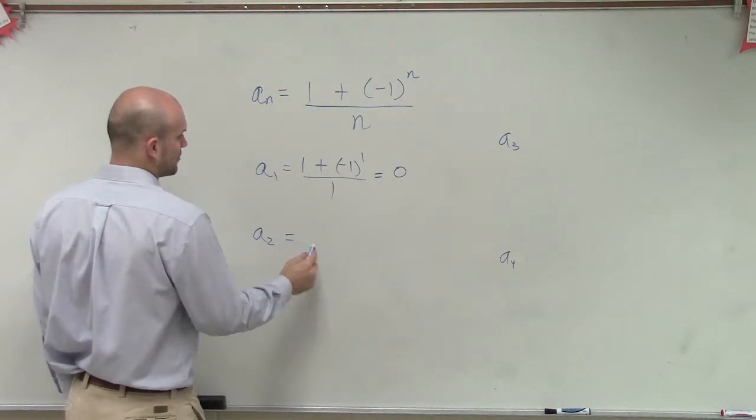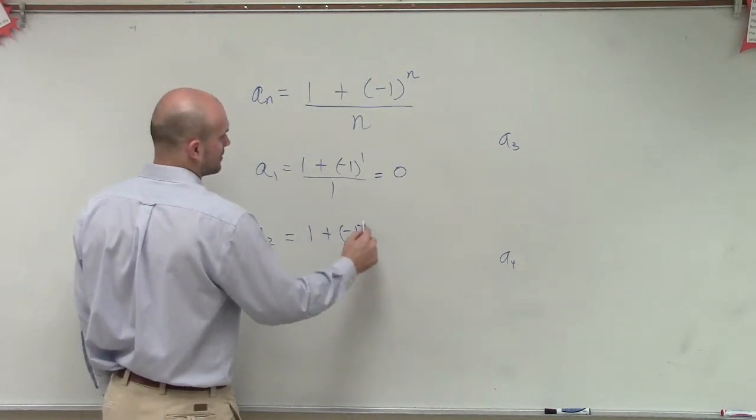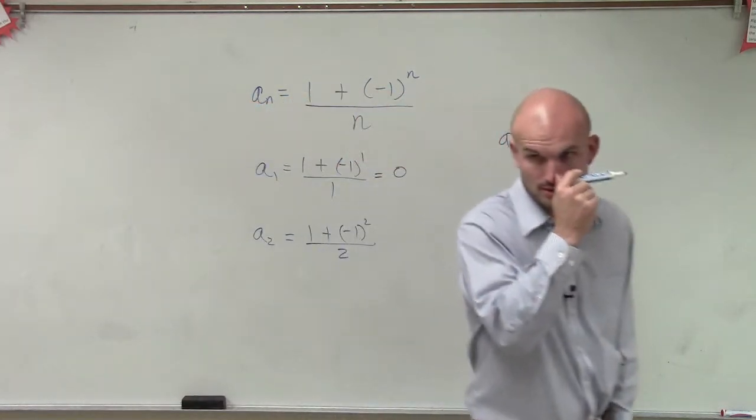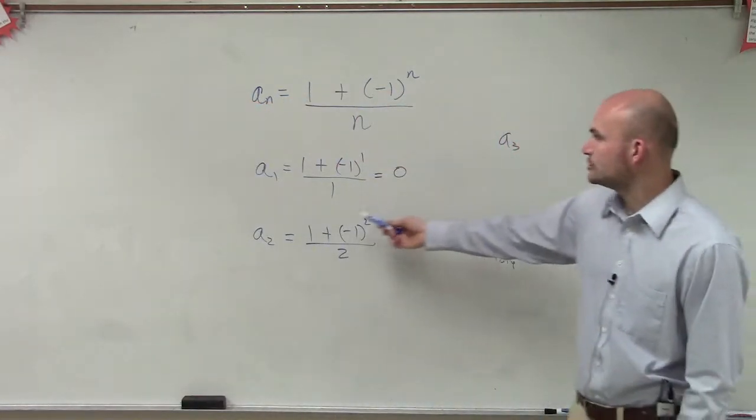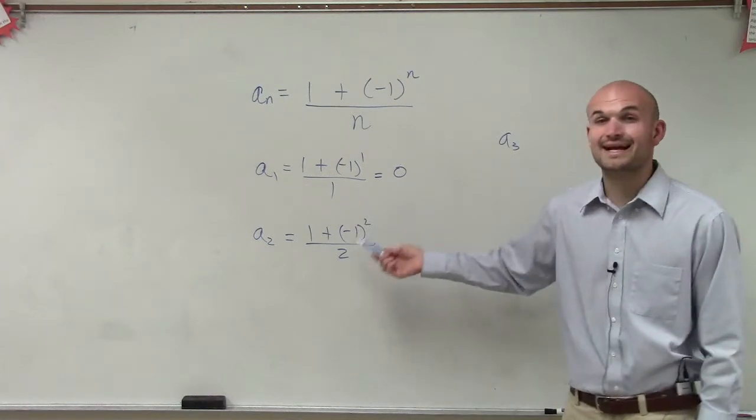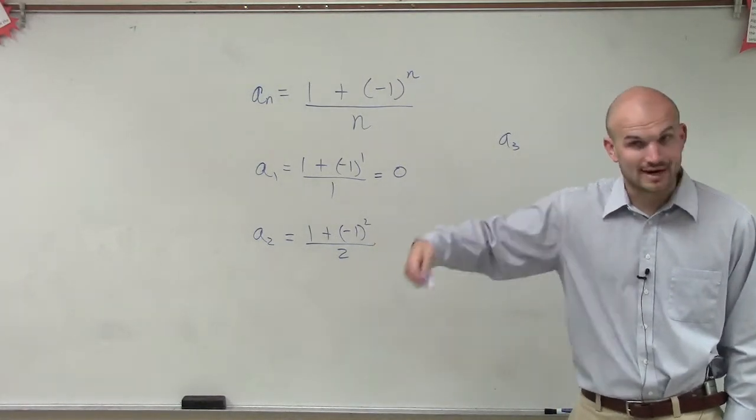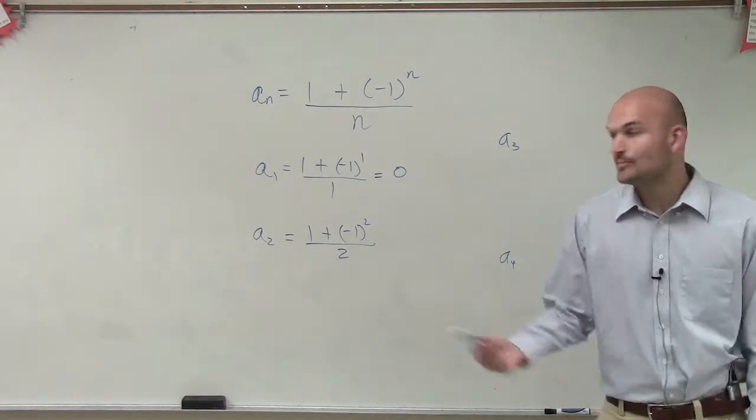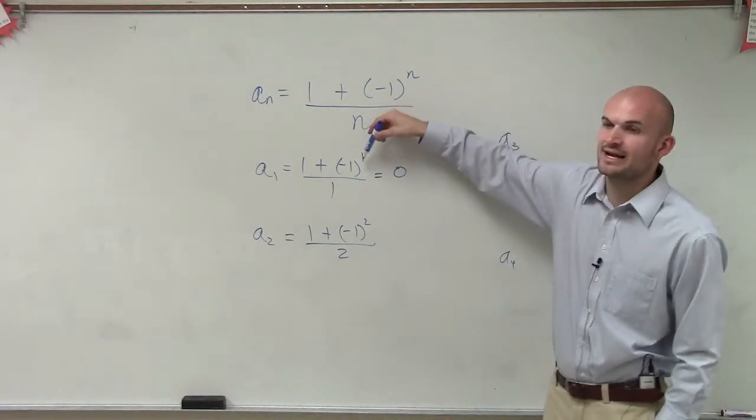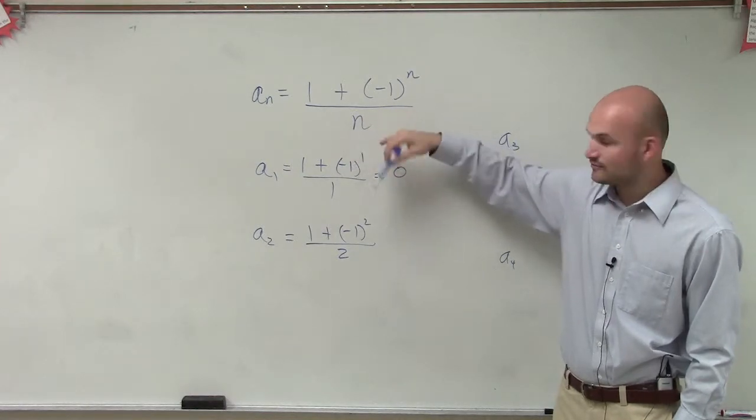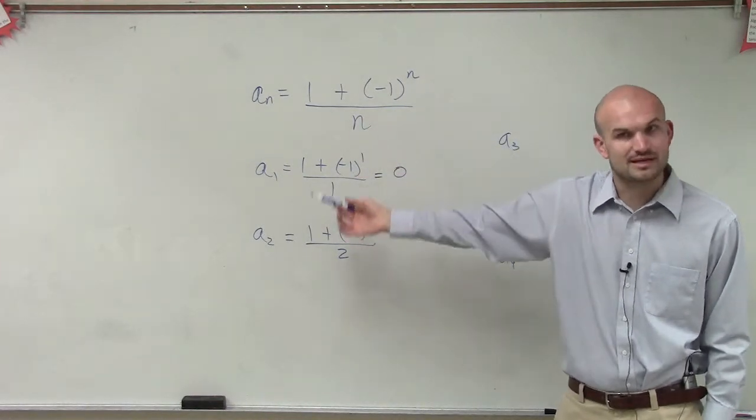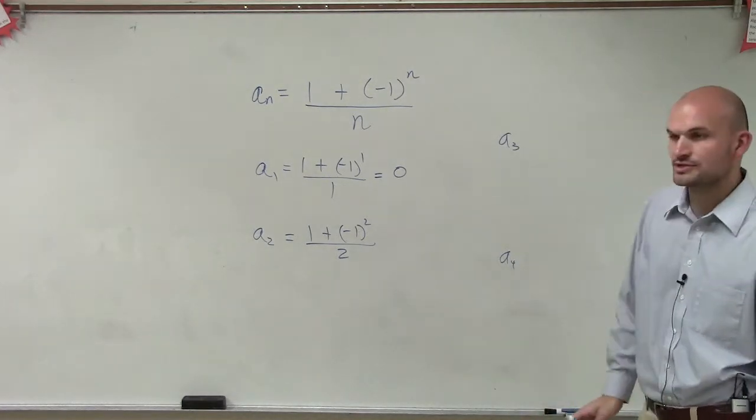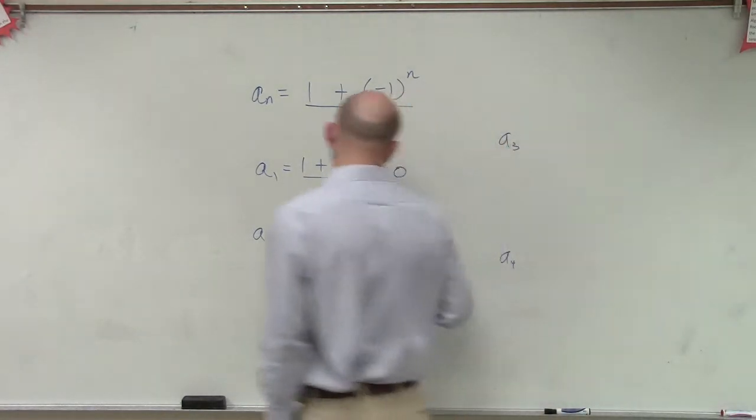Now let's do a_2. 1 plus negative 1 squared over 2. So now I just put the 2 back in for my n. Now remember, negative 1 times itself, right? Negative 1 times negative 1 is going to be now a positive 1. And pretty much you guys can always notice, whenever you have a negative number raised to an odd power, it's going to be negative. When it's raised to an even power, it's going to be positive. So that becomes a positive 1. 1 plus 1 is 2. 2 divided by 2 is 1.